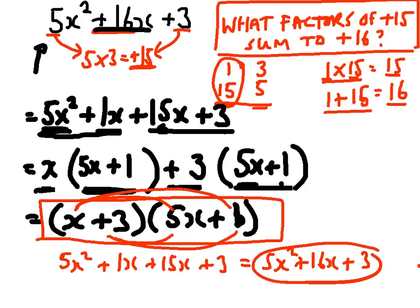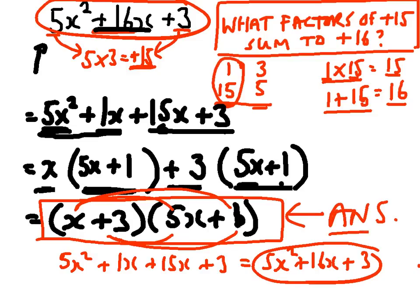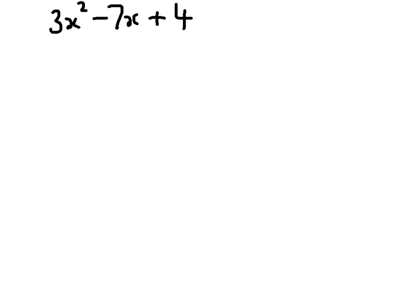So that is equal to 5x squared plus 16x plus 3, which is what the question was in the first place. So that's good. And our final answer is this. This is the factorized format of that. Let's look at a slightly trickier one now. Same basic process, but this gets a little bit more tricky because we've got negative numbers involved.